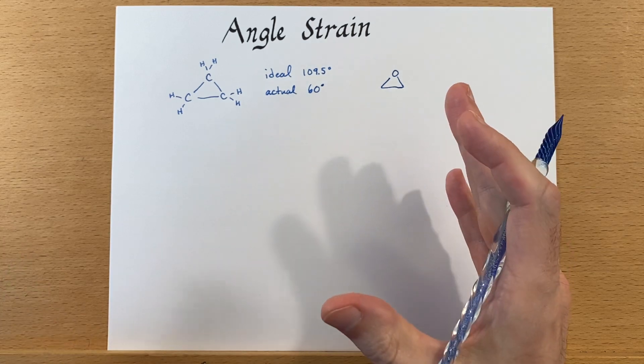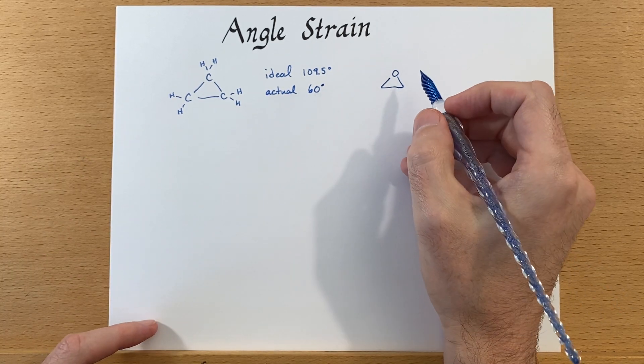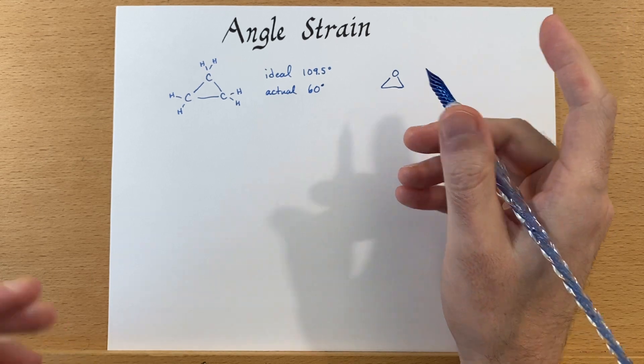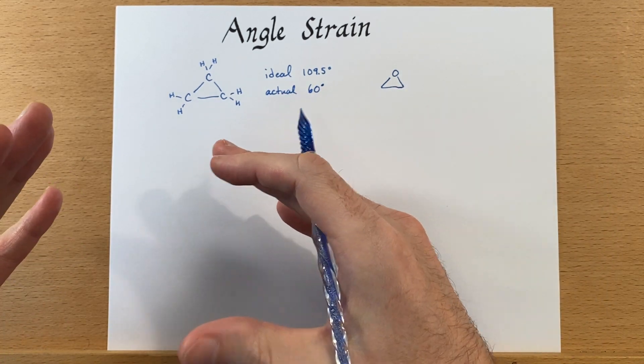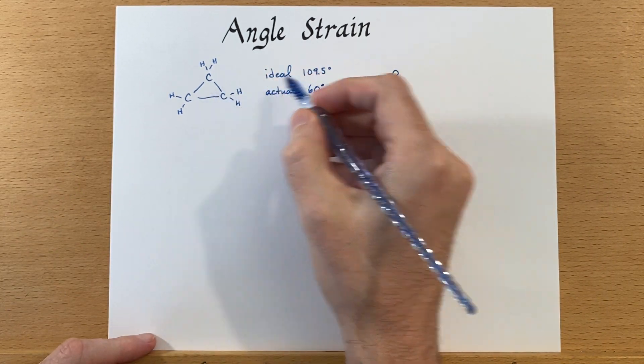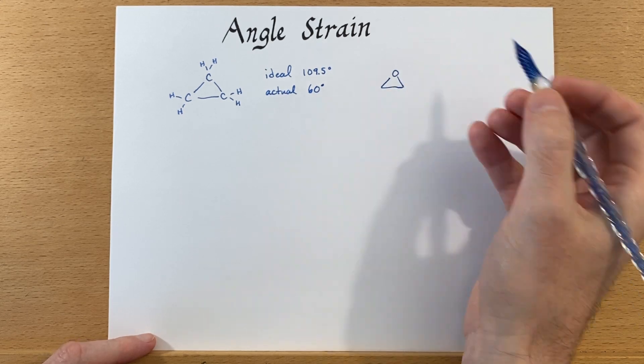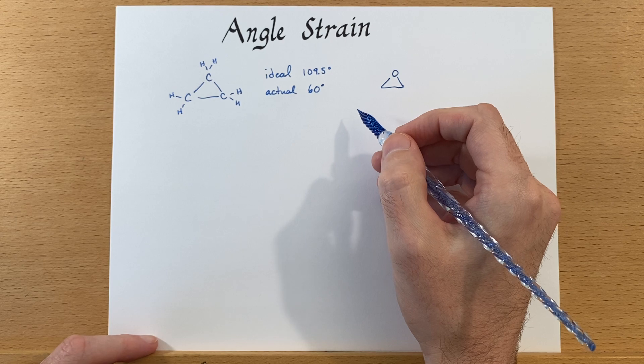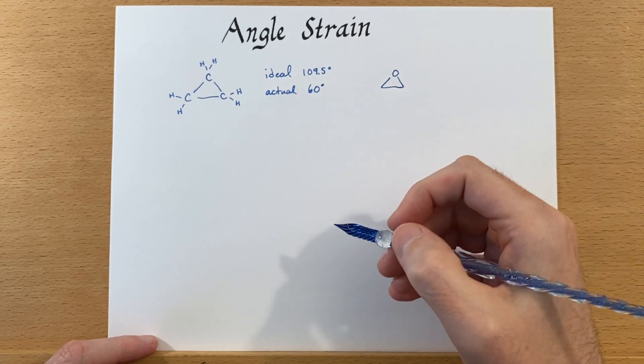So we're compressing this angle. And it doesn't like to be that way, right? It would prefer to break one of these bonds and open up and relieve that strain. And if we could, then it would be in a lower energy state.